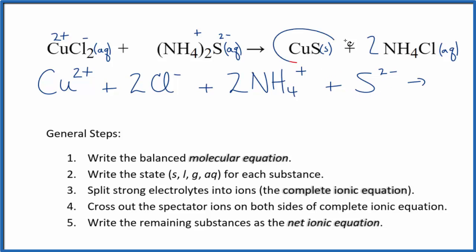For the products, we have this solid here. We don't split those apart in net ionic equations. We'll keep that together. We have the plus and the minus. So two ammonium ions, just like in the reactants. And then we have two chloride ions, also like the reactants. This is the complete ionic equation.